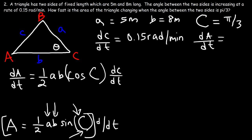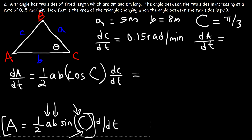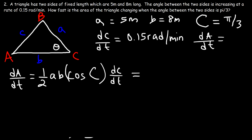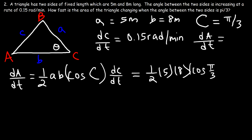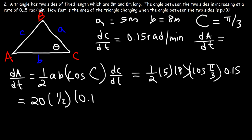Now let's plug in what we know. A is 5, B is 8, cosine of pi over 3, times dC/dt which is 0.15. One-half times 5 times 8 equals 20. Cosine of pi over 3 is one-half, so 20 times one-half is 10. Then 10 times 0.15 is 1.5.